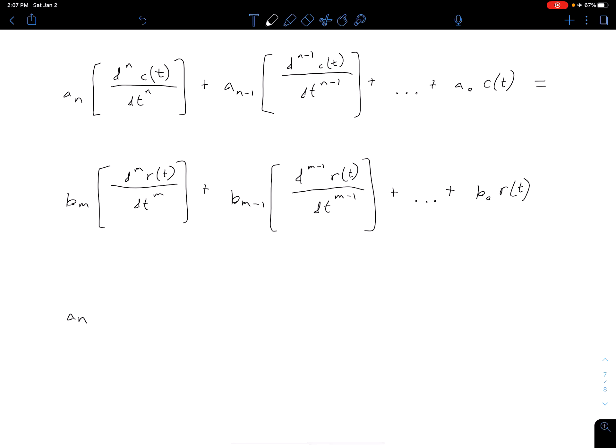So we have, for instance, a sub n. So for instance, maybe that's five, for example. So then when we're looking at this derivative term, we say we have the nth derivative. So we have s to the power of n times c,